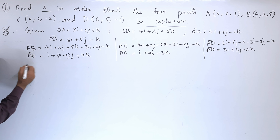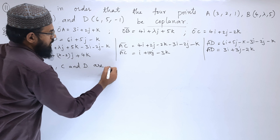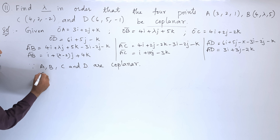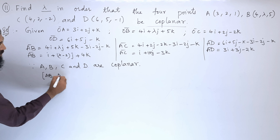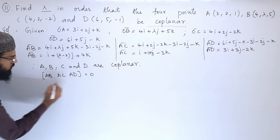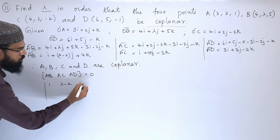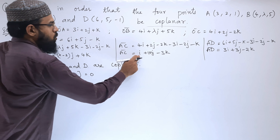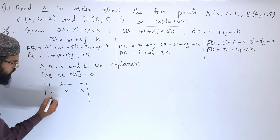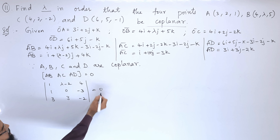Since points A, B, C and D are coplanar, the scalar triple product of AB, AC, AD equals zero. So we set up the determinant with AB = (1, λ-2, 4), AC = (1, 0, -3), AD = (3, 3, -2) equal to 0.